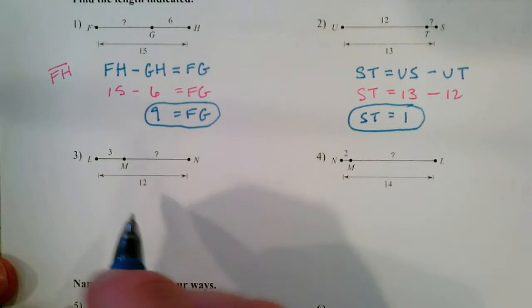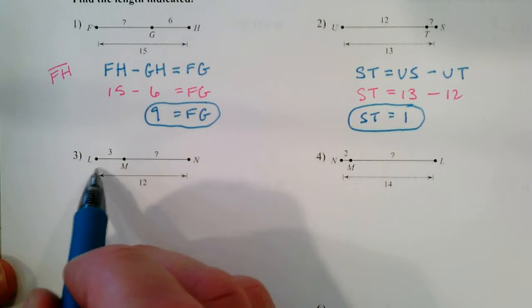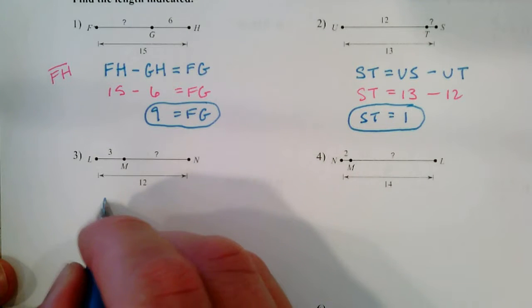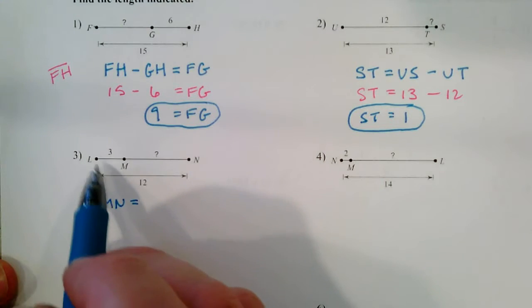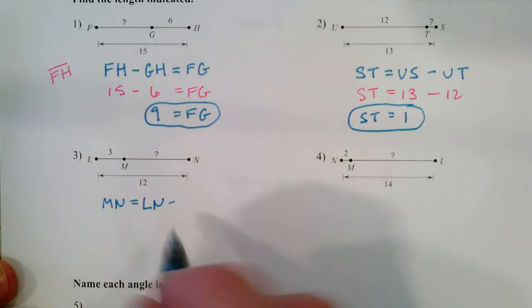Let's see here, we're trying to find MN, and MN is equal to LN, the whole length, take away LM.